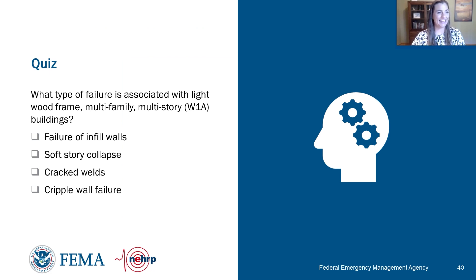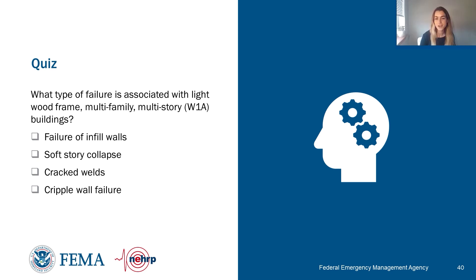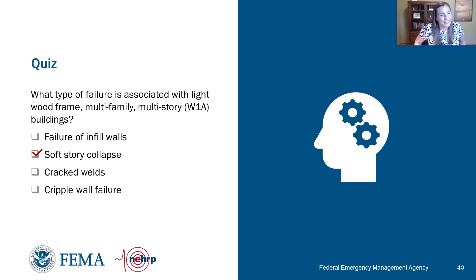A quiz question asks: what type of failure is associated with light wood frame, multi-family, multi-story buildings — failure of infill walls, soft story collapse, cracked welds, or cripple wall failures? The answer is soft story collapse, because W1A buildings are typically built above garages or tuck-under parking, creating a very soft first story that is a real vulnerability.